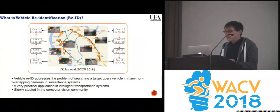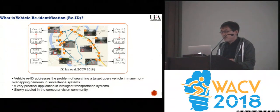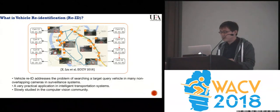Vehicle Re-ID aims to spot a vehicle of interest in different cameras with no overlapped views. It can be applied to many practical scenarios such as urban surveillance and security.